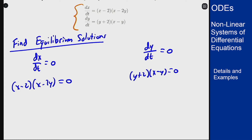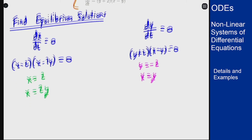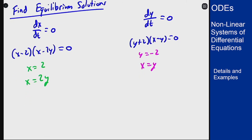Splitting these up, I get that x equals 2 or x equals 2y for the x equation, and for the y equation I get y equals minus 2 or x equals y. Now I can pair these up and see what happens because I want these to be equal to zero at the same time.